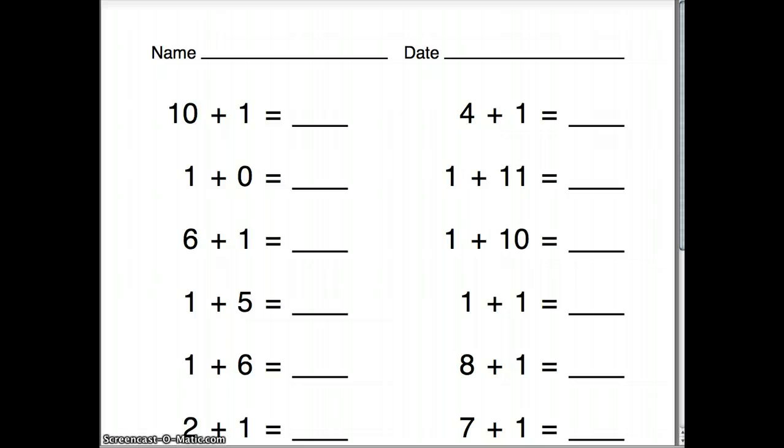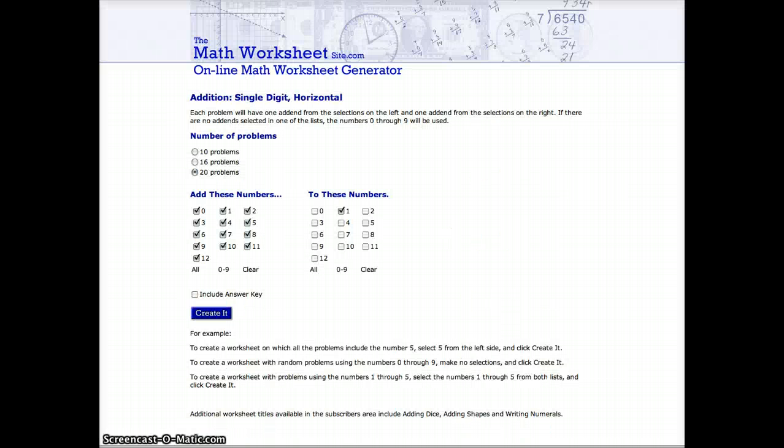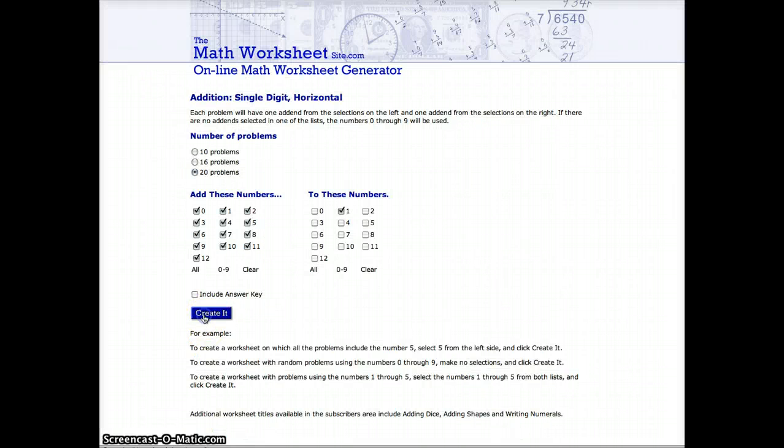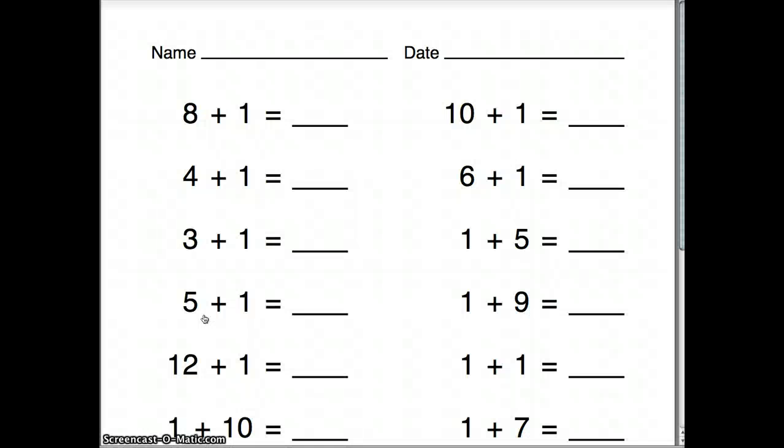So the maximum number of questions that we can choose to generate is 20. However, if we go back to this page, we can click create it again and it will generate another 20 random questions. So a different set of questions. So we can just keep on going back and click create it if we want to get more and more questions.